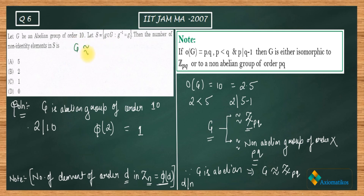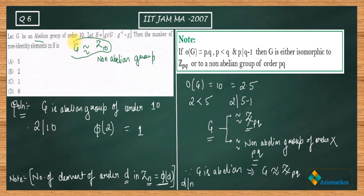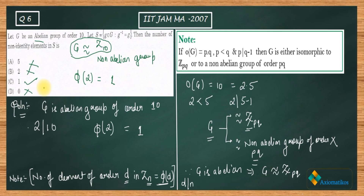To conclude: first, we used the theorem to figure out that G is isomorphic to Z_10 or to a non-abelian group of order 10. Since G is given to be abelian, G is isomorphic to Z_10. Inside Z_10, we evaluate the number of elements of order d using Euler's phi function. To find self-inverse elements, we find elements of order 2: that count is φ(2) = 1. Therefore A is incorrect, B is incorrect, C is correct, D is incorrect. Thank you.